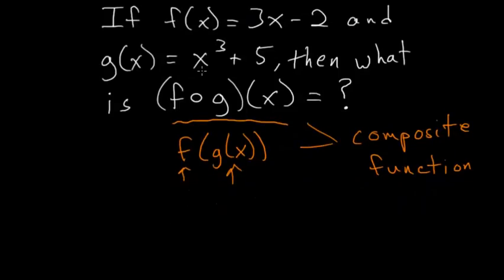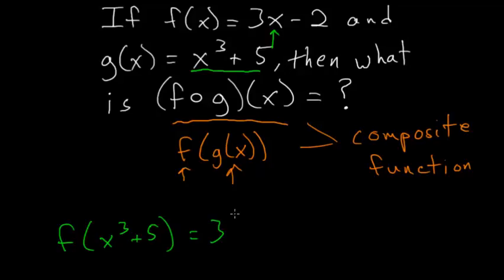So if we put the function x cubed plus 5 in anywhere we see an x inside f of x, we'd have f of x cubed plus 5, and this is equal to 3 times x cubed plus 5 in parentheses minus 2.